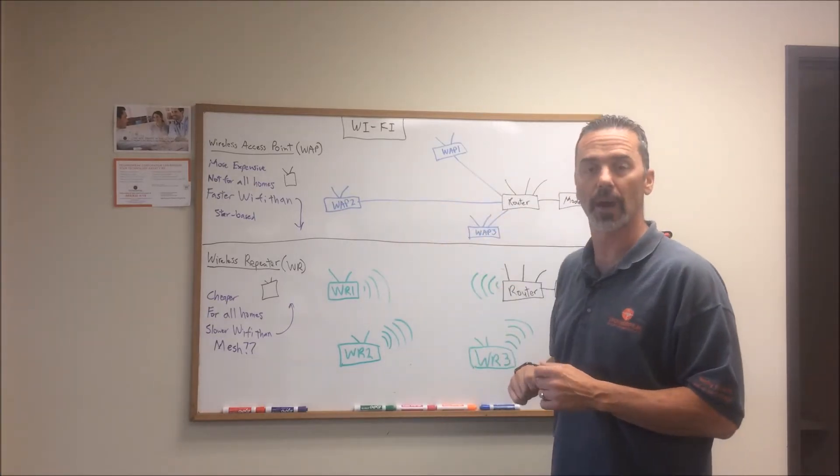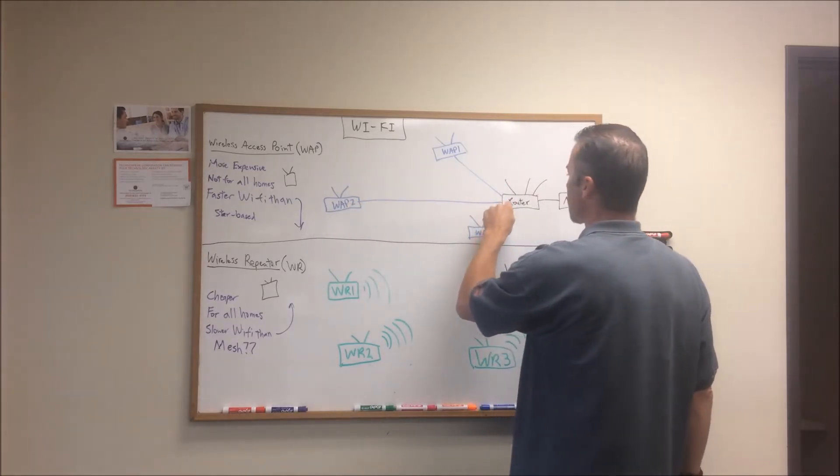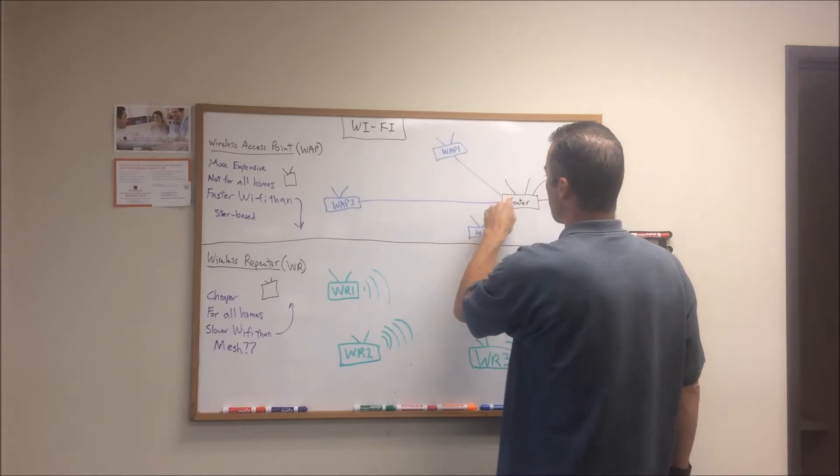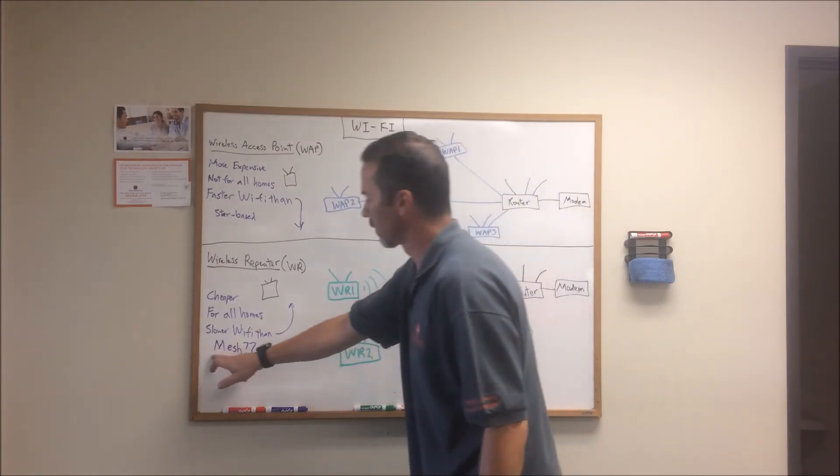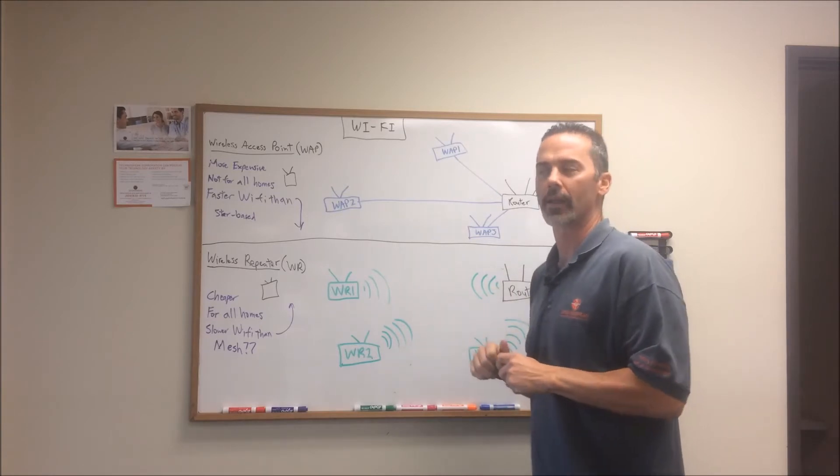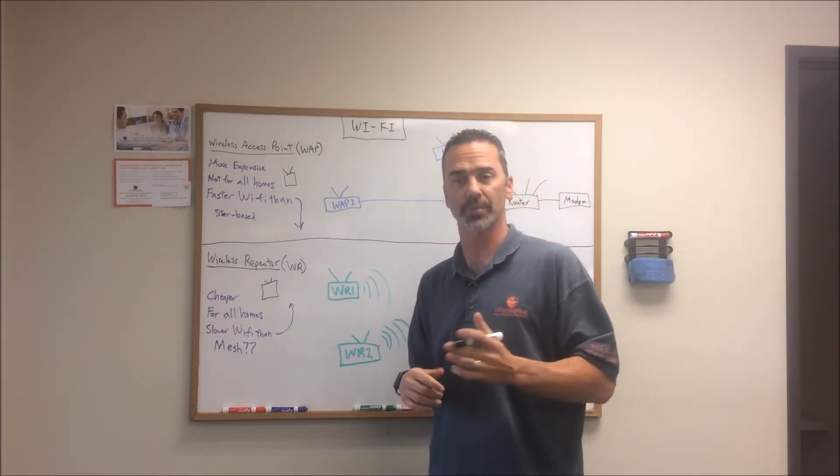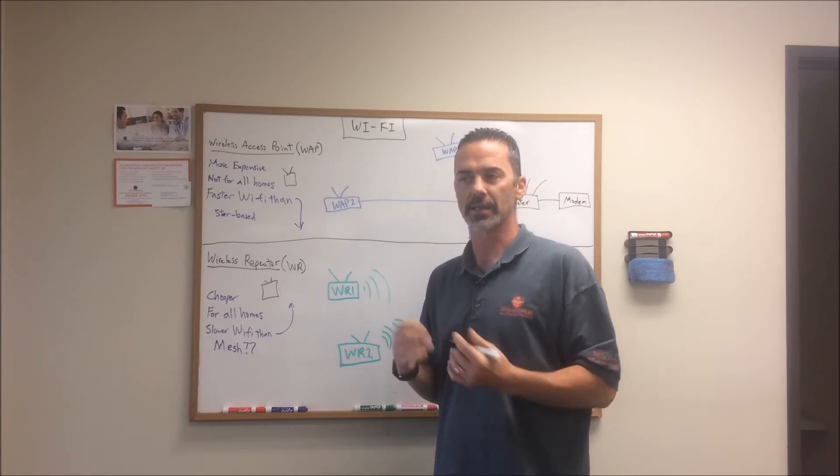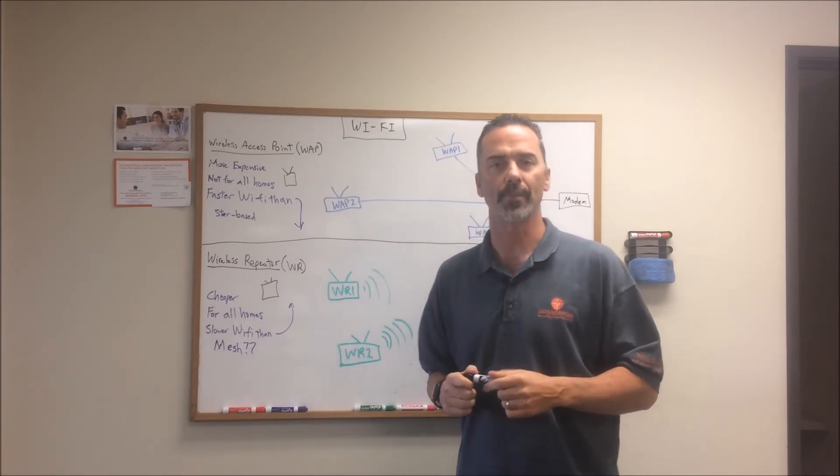This is actually a star-based topology, meaning that each wireless access point is communicating back to the router, like this. These wireless access points are not communicating to each other. You may hear this mesh term in this wireless repeater world being kind of thrown around a lot. That mesh does have a technical description that is beneficial, however, the way they're using it is really kind of more marketing hype than anything else.